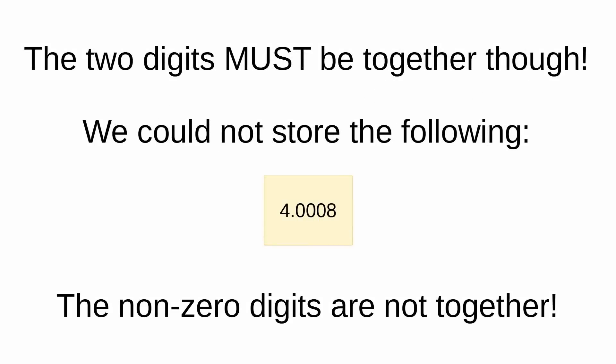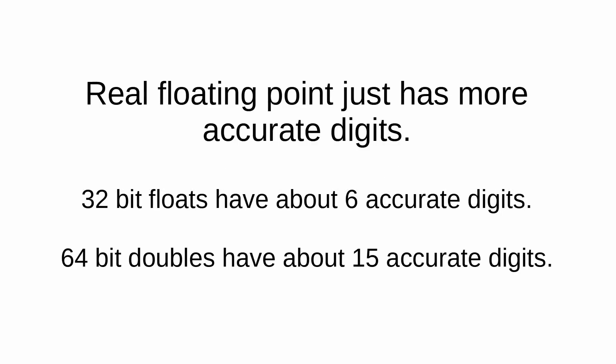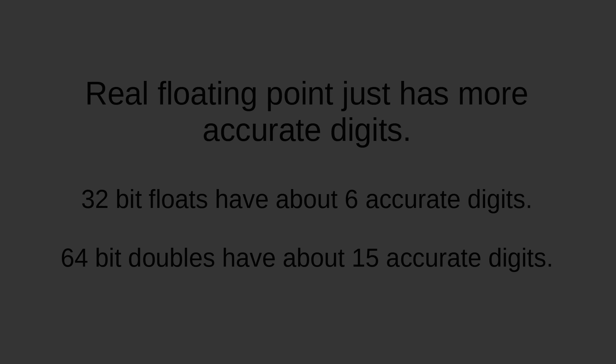So we couldn't have 4.0008, for example, because the digits are too far apart. Now, this is actually pretty close to the way that real floating-point works, except that real floating-point is just more accurate. A single-precision float's got about six decimal digits of accuracy, and a double-precision float has got about 15 or so.